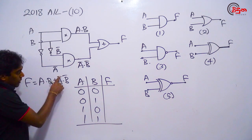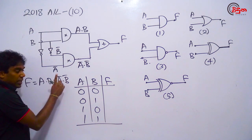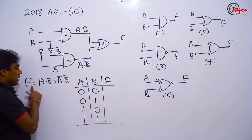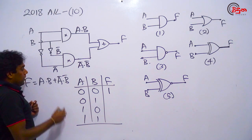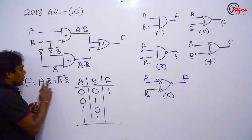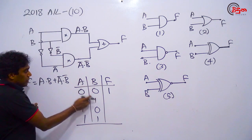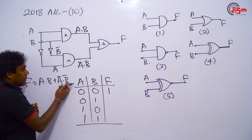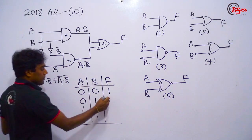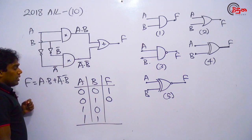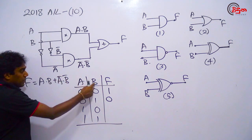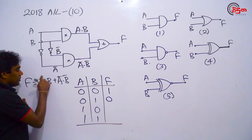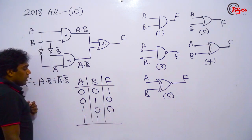If A is equal to A, B is equal to B, then F is equal to F. So, if A is equal to A, then B is equal to B, then F is equal to F.